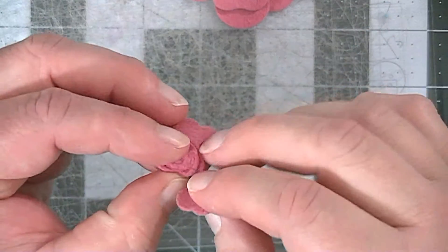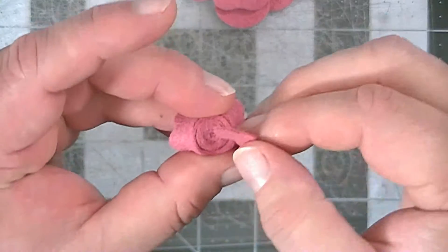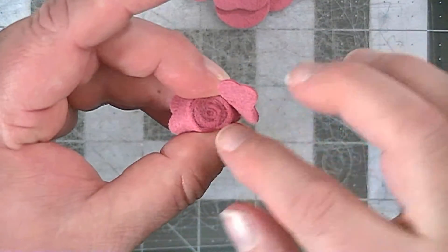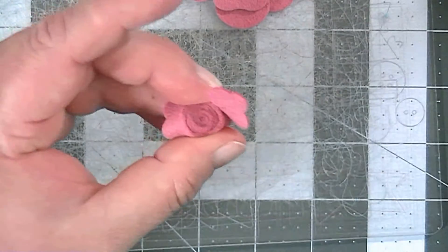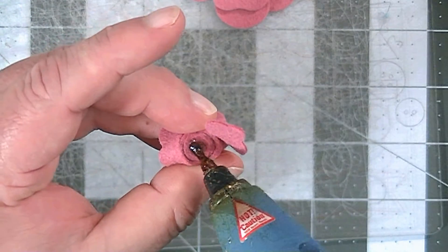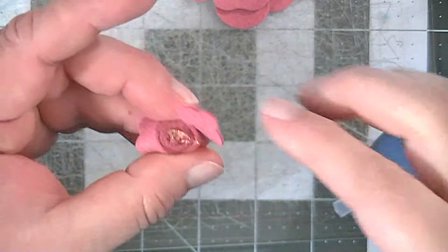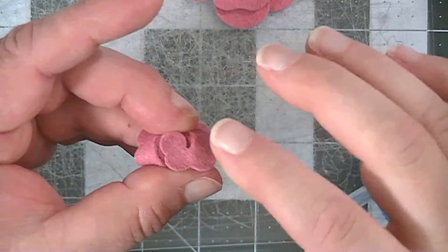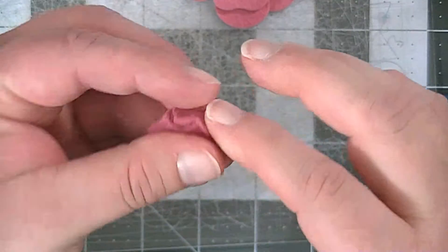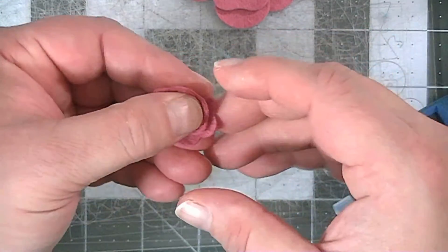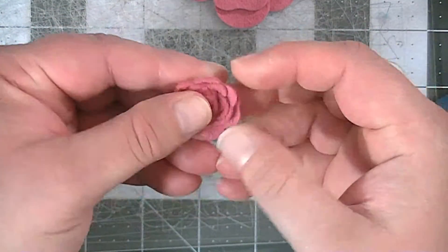When you get to the end, it's going to look like this. See that little piece right there? You're going to put some glue right there to hold the flower together, and then just pop that little piece there. Don't burn yourself. Then you come up with something like this, and I usually mush mine around until I get it the way I want it.